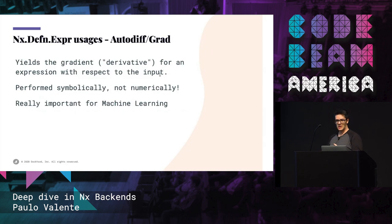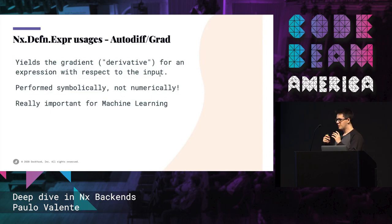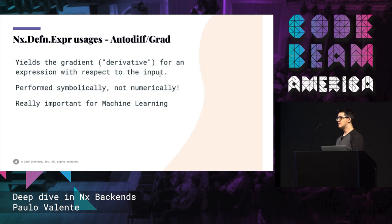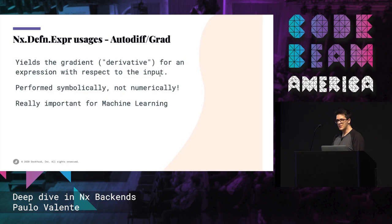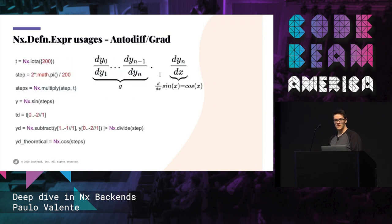I want to look into auto-diff or grad — automatic differentiation — because it's a way that we can see how we can turn a given symbolical representation into another one, instead of just manipulating numbers. This process is really important for machine learning, because normally machine learning will use some form of derivatives to calculate the error functions and improve the values fitted to a given test input. The important thing is that we can perform those symbolically and not numerically.